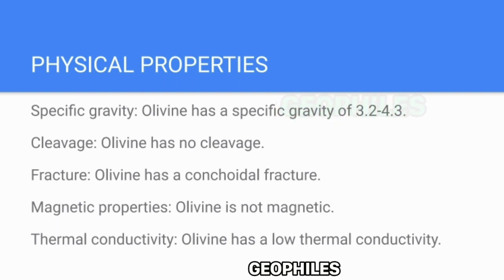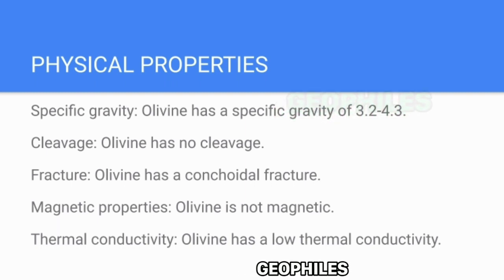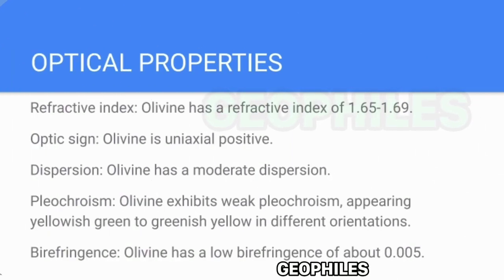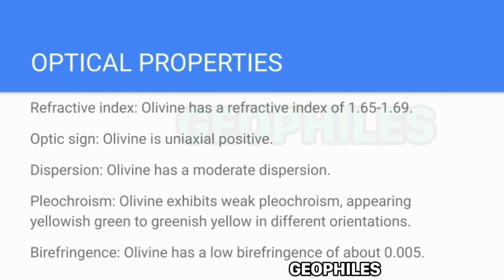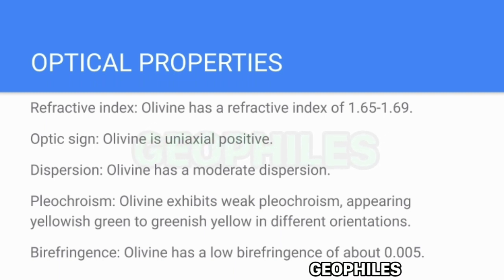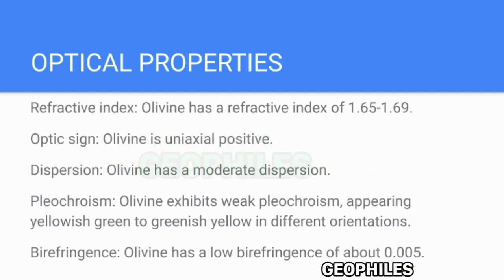Magnetic Properties: Olivine is not magnetic. Thermal Conductivity: Olivine has a low thermal conductivity. Optical Properties: Olivine has a refractive index of 1.65 to 1.69.